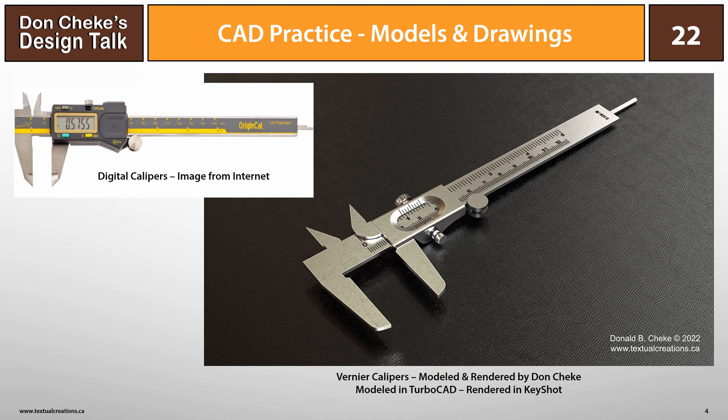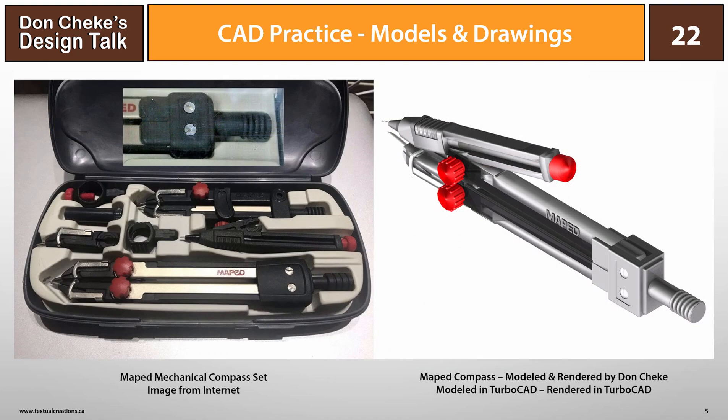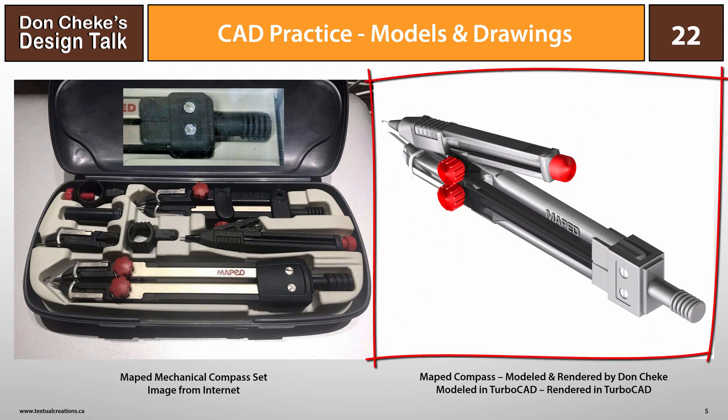Nothing helps more than finding a real-world item around the house and modeling it one piece at a time. To help with this process, I encourage users to purchase a set of calipers — grab a non-digital set if you want to learn that on top of it. I've had a couple of digital calipers over the years, but my last set by Orion Cow I've liked the best.